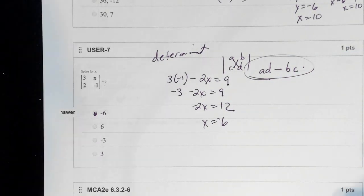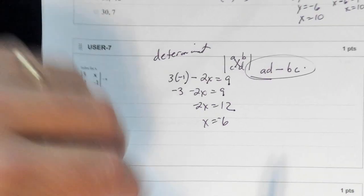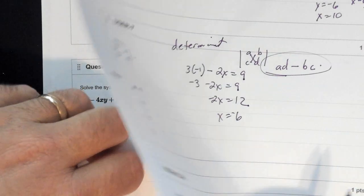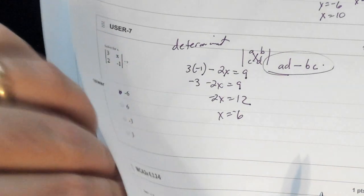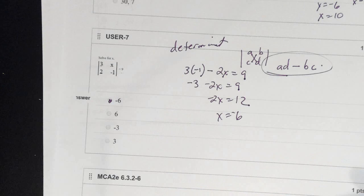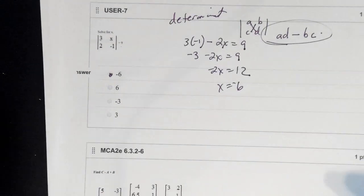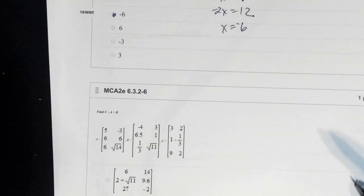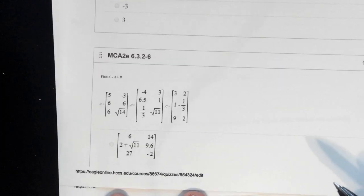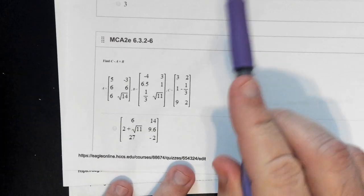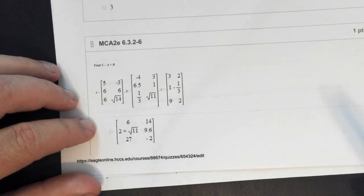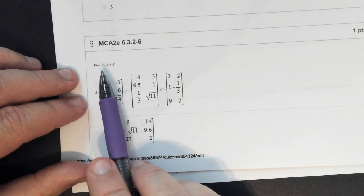There's also a 3 by 3 determinant in the notes using the diagonal method, but I don't think we're asking you that on the test — it'll be a 2 by 2.